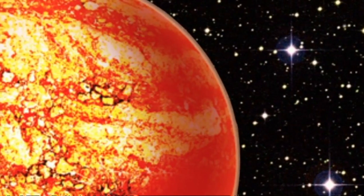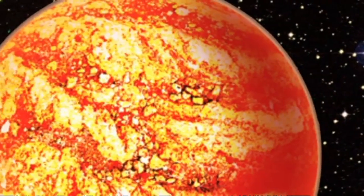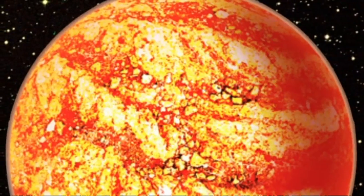That is to say that Kepler 78b, as it's now known, has the same amount of iron and rock.